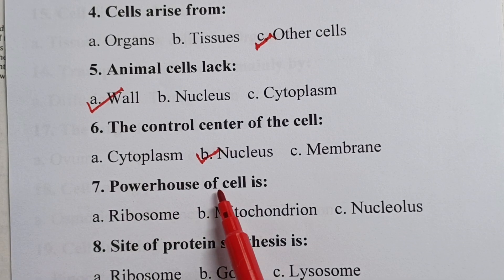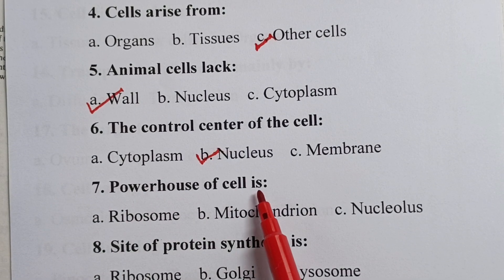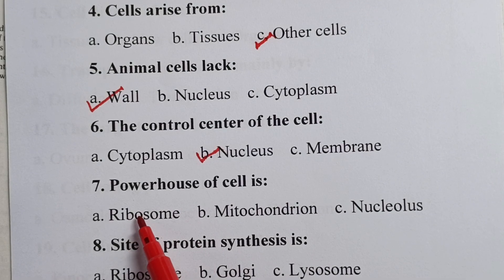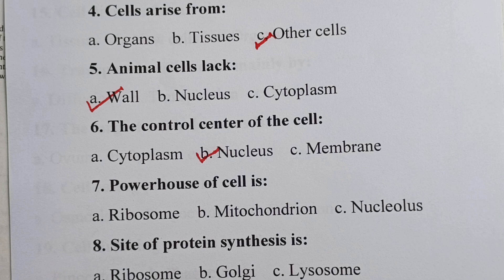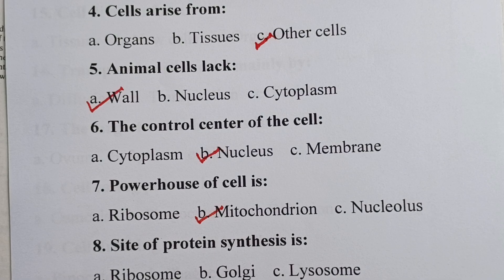Question seven: the powerhouse of the cell is — is it ribosome, mitochondrion, or nucleus? Your correct answer is mitochondrion. The mitochondrion produces energy for the cell, and because of this, it is called the powerhouse of the cell.